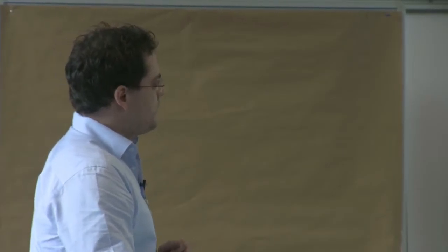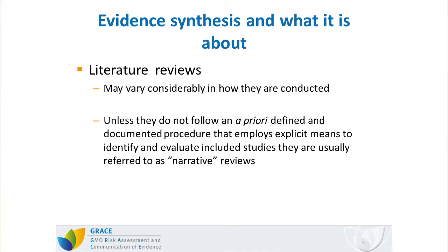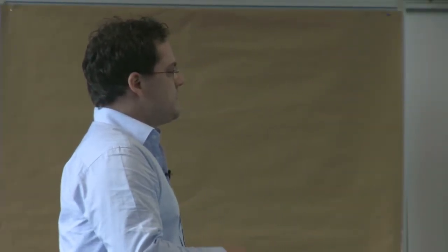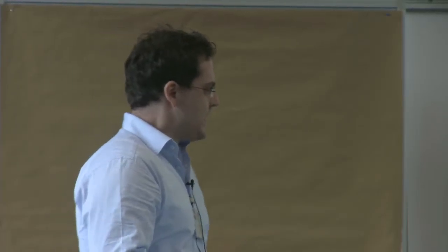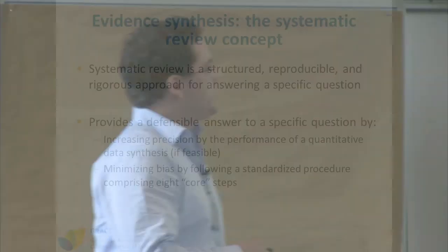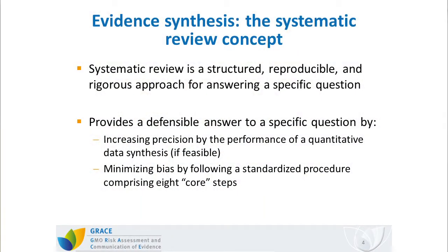To answer both kinds of questions, literature reviews are performed, which may vary considerably in how they are conducted. Unless they follow an a priori defined and documented procedure that employs specific means to identify and evaluate included studies, they are usually referred to as being narrative. In contrast to this narrative approach, an alternative way proposed by systematic reviews tries to circumvent these potential limitations by following a highly structured, reproducible, and rigorous approach for answering a specific question.